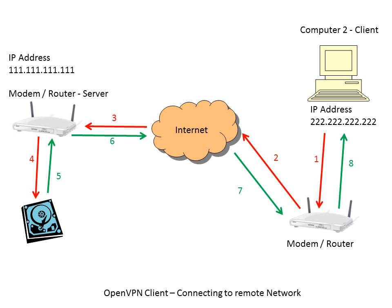With your successfully set up network, when your client computer wishes to access a hard disk connected to your server router, it will send that request via the modem router via the internet. Numbers 2 and 3 in the diagram are fully encrypted because that is what we set up the OpenVPN client to be. The router at the server end will decrypt the information and request the hard disk to provide the information required — that's number 4. The hard disk returns the information at number 5. The router re-encrypts the data, puts it through the internet at numbers 6 and 7, and the router then takes it back to the PC and decrypts it at number 8.